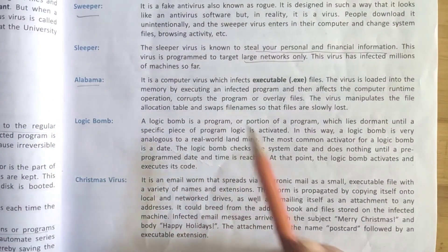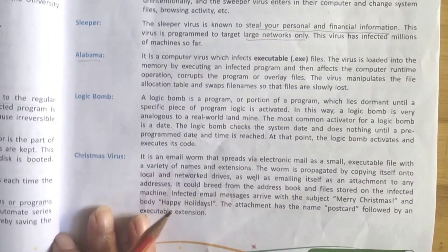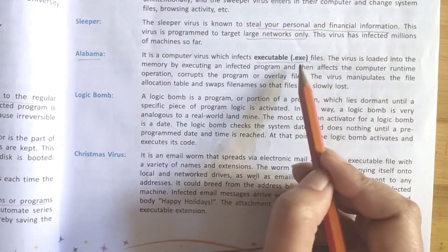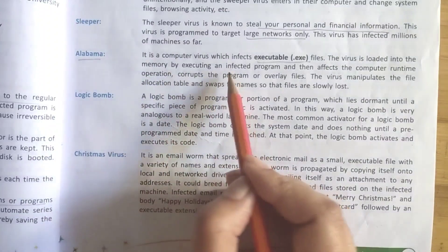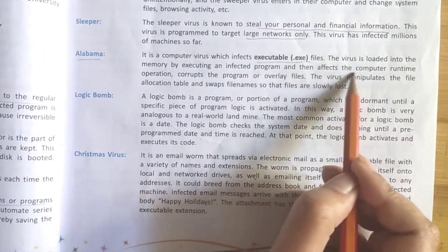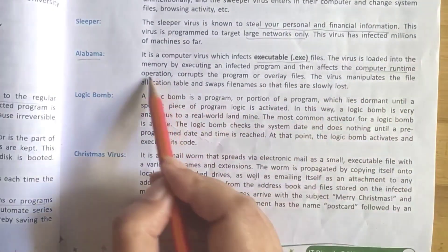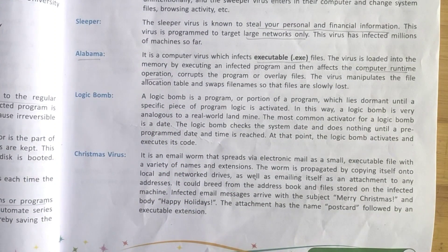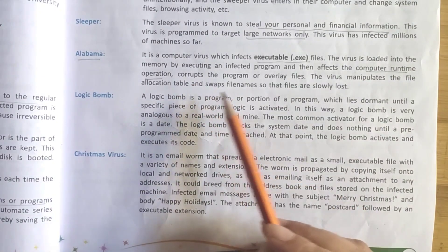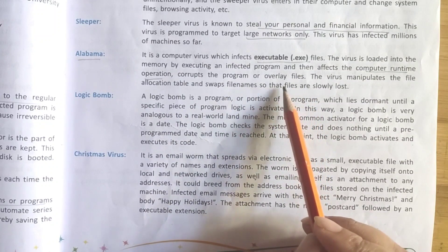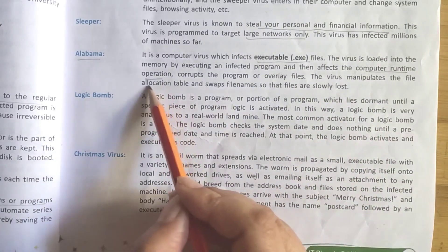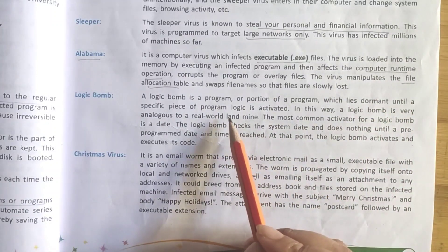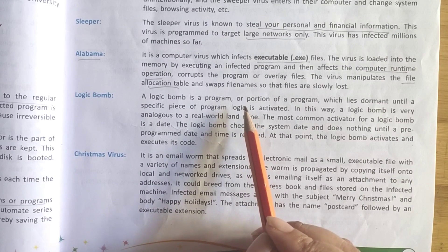Next, another example is Alabama virus. Alabama virus mostly infects executable files — the files which are going to execute in your computer system. The virus is loaded into your computer memory by executing an infected program and then affects the computer's runtime operation. They activate when you run any particular program, corrupt files, make copies of files, and are very effective at manipulating the file allocation table — swapping and changing the names of files.